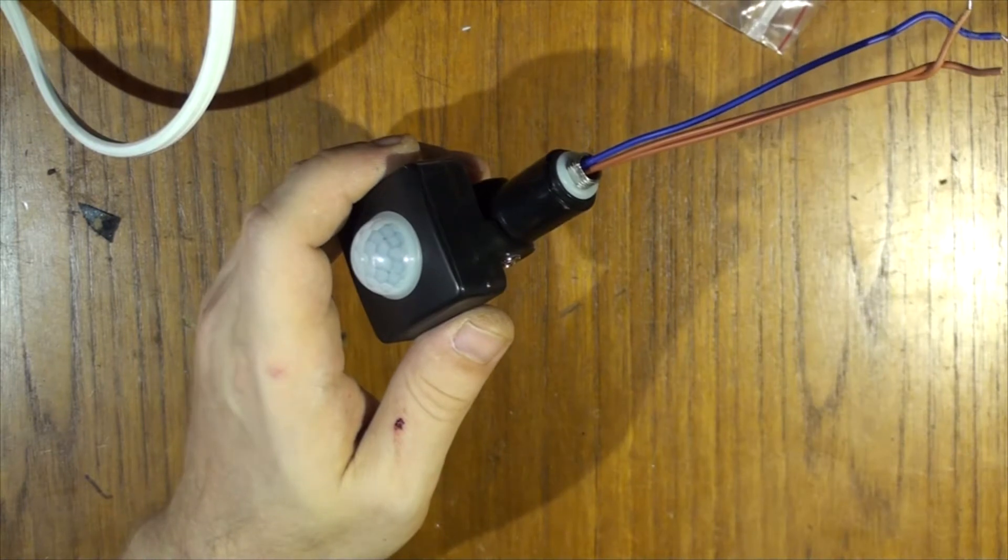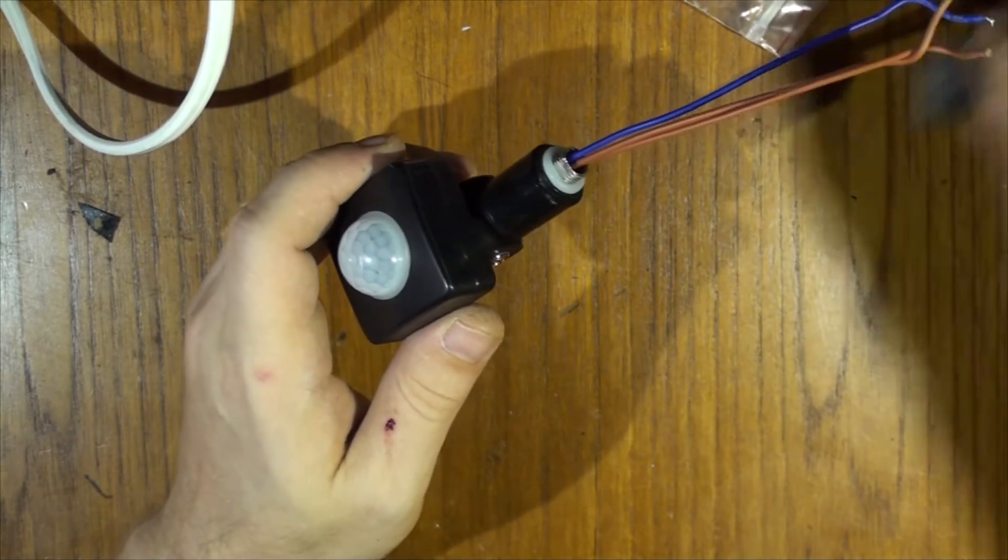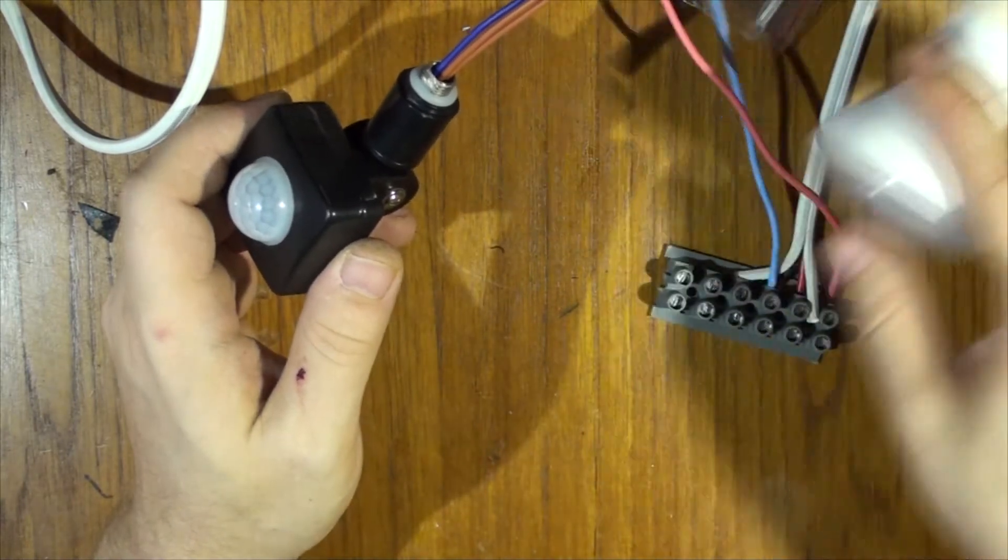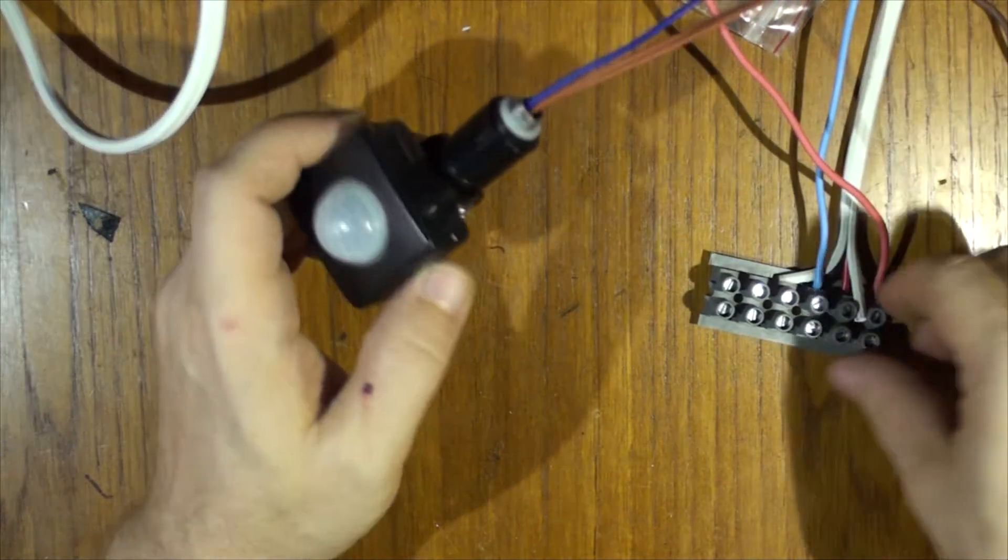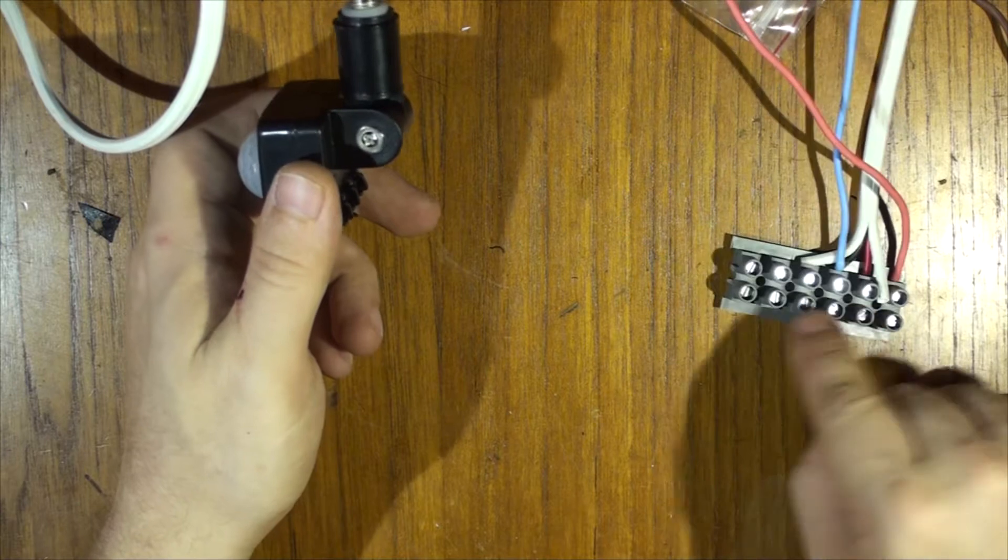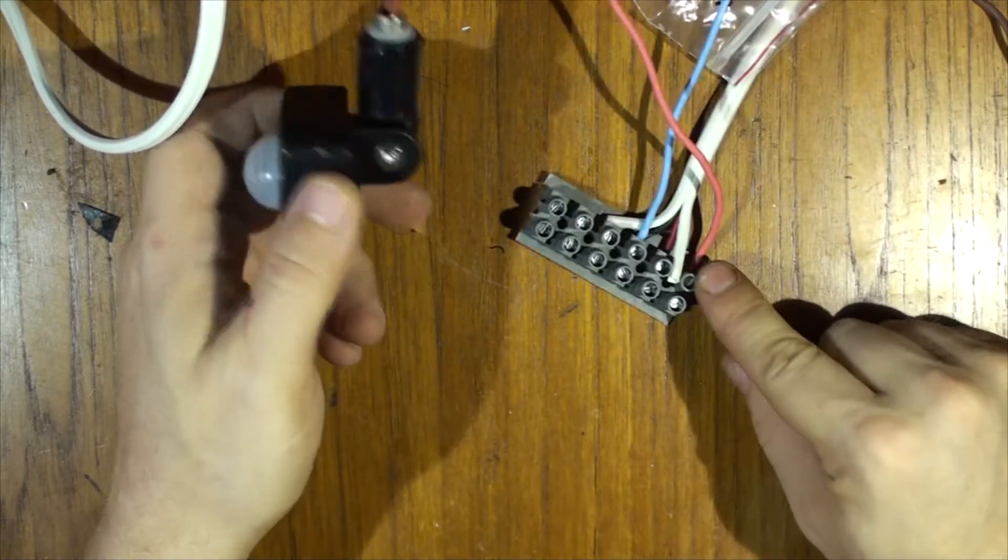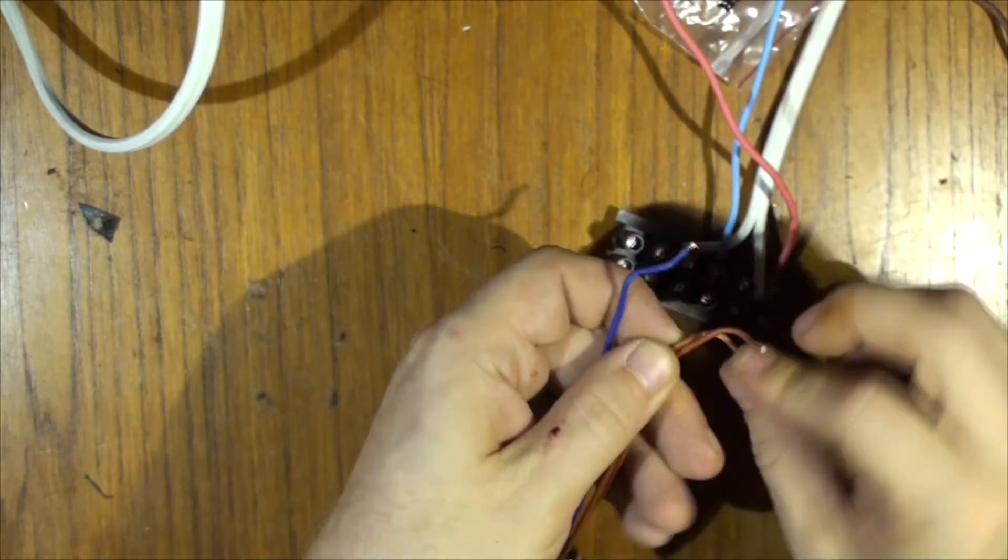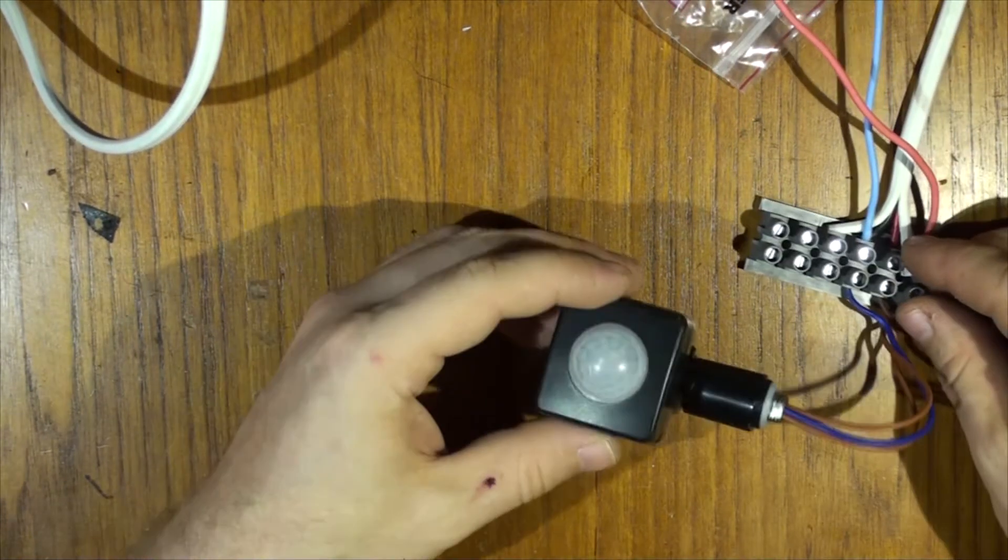So let's hook it up to a bulb. I've already got everything ready here. I've got a terminal here that is hooked up to a light bulb on the side, and we've got our neutral, our active, and our load is on the last one. So I'm going to wire this up.